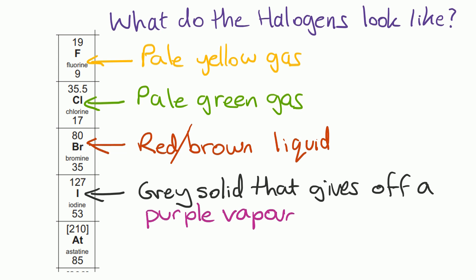Now you won't be asked about astatine because it's a very radioactive element. It's very unstable. In fact it's thought that there's probably less than 30 grams of it in the whole earth's crust at any one time. So it's just the first four that you need to remember the appearance of. And as we go down there we can see that they're changing from gas to gas to liquid to a solid. So that's suggesting that the melting points and boiling points are increasing as we go down the group.